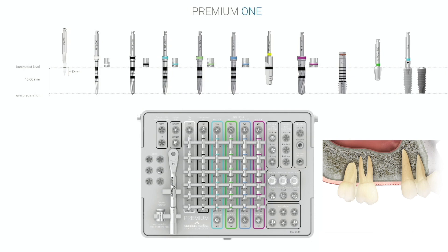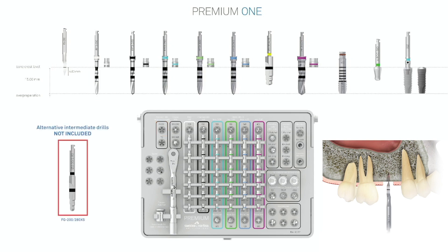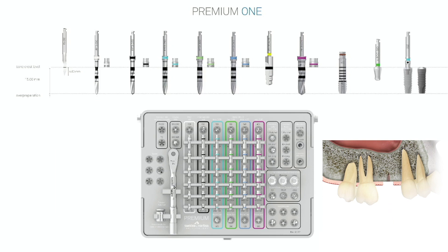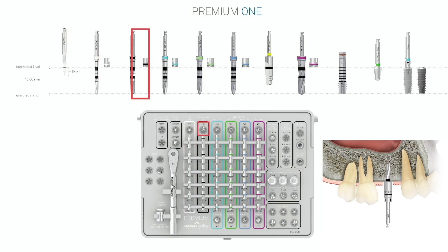Let's go through the Premium One surgical sequence. Starting at the top left of the surgical kit is the precision drill. The next box is the guide drill box with two different guide drills that can be used throughout the surgical sequence. Following that is the pilot drill — a 2.0 diameter — and as you can see below the drill there are multiple stoppers that are length or height based to help during the drilling sequence. The next is the intermediate drill with a 2.5 diameter, also equipped with stoppers.